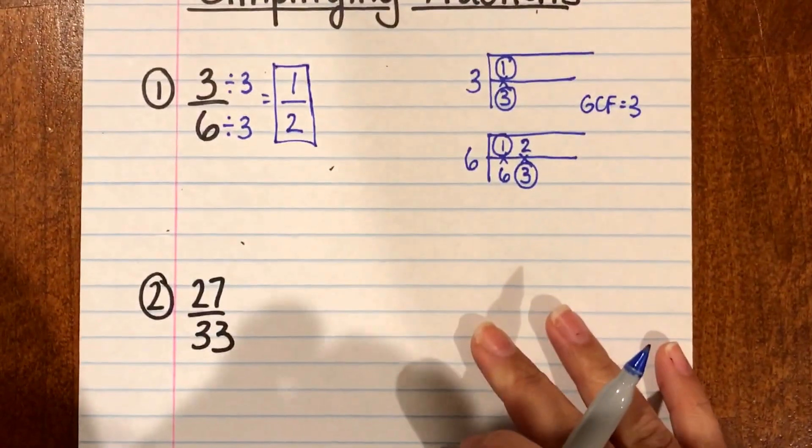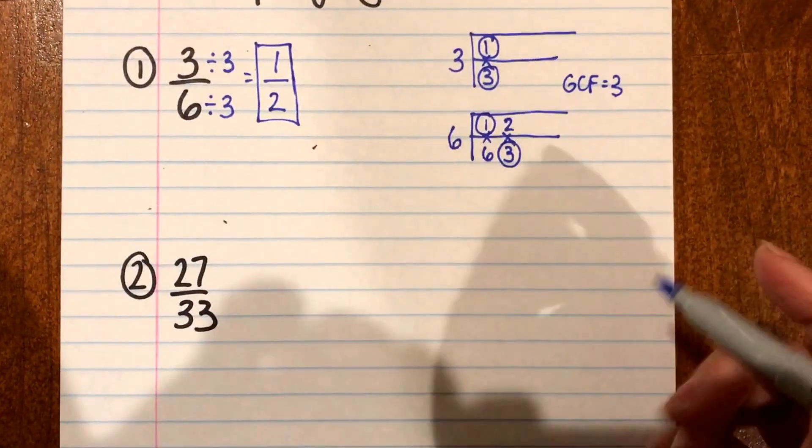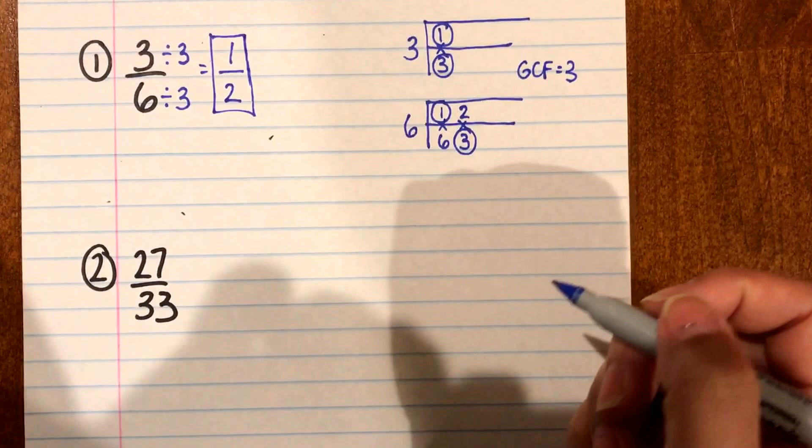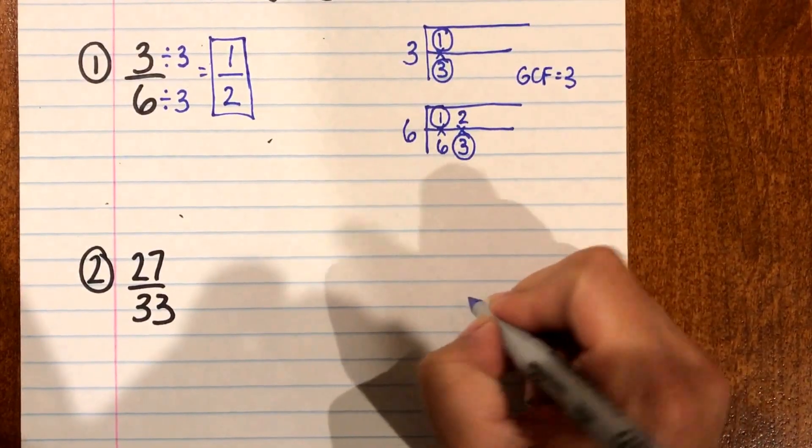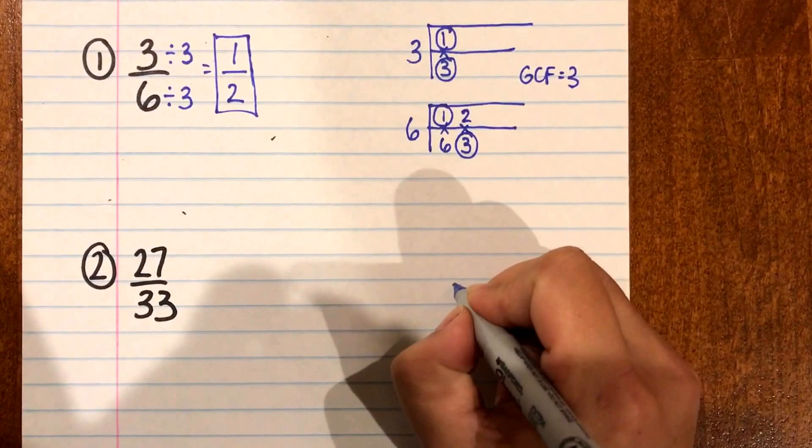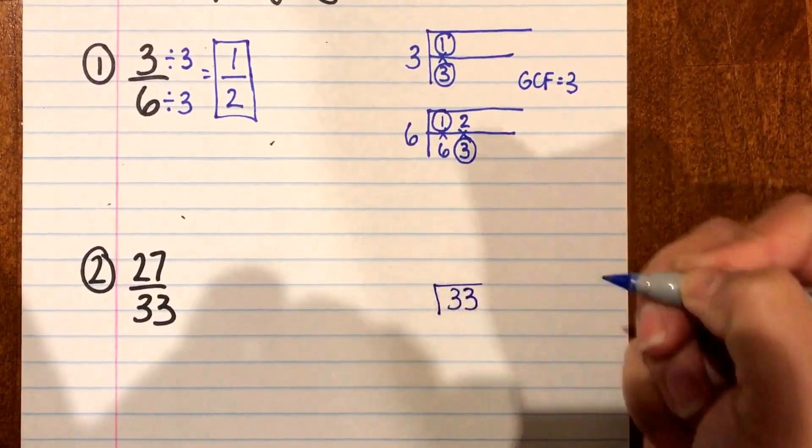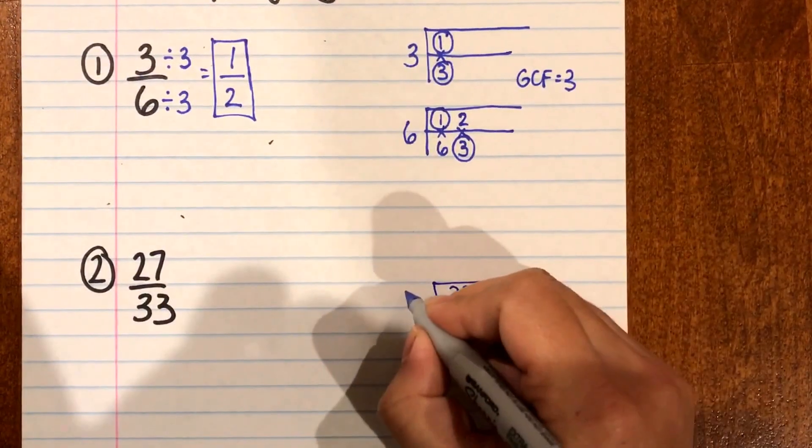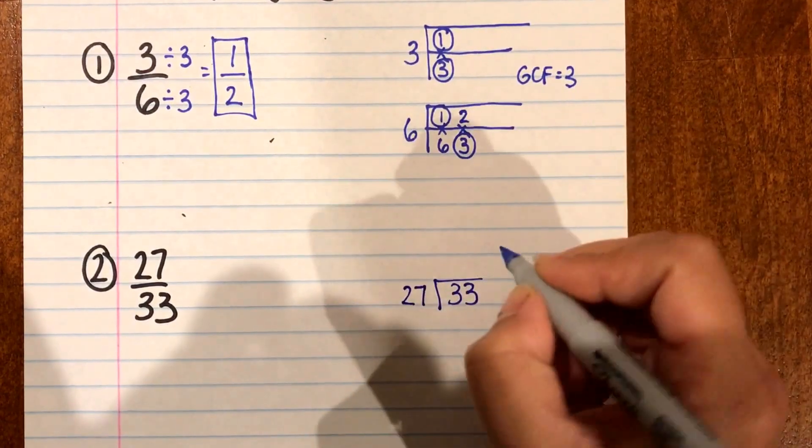Now if I look at number 2 I have 27 over 33 and this way I'm gonna show you using the Euclidean algorithm or the dividing method. So I know my big number is 33 that's gonna be my dividend and my 27 is smaller so that is my divisor.